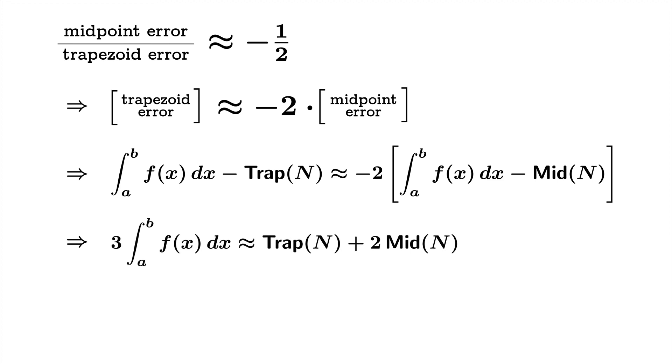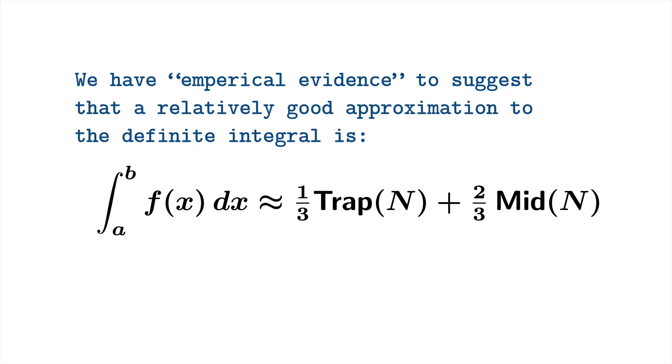Now what we can do with this is we can actually solve for the integral. Once we add the correct quantities to both sides, we're going to get three times the integral equals the trapezoid sum plus twice the midpoint sum. And then divide by three, and there you have it. We have empirical evidence to suggest that a relatively good approximation to the definite integral is this weighted average: one-third the trapezoid sum with N divisions plus two-thirds the midpoint sum with N divisions.